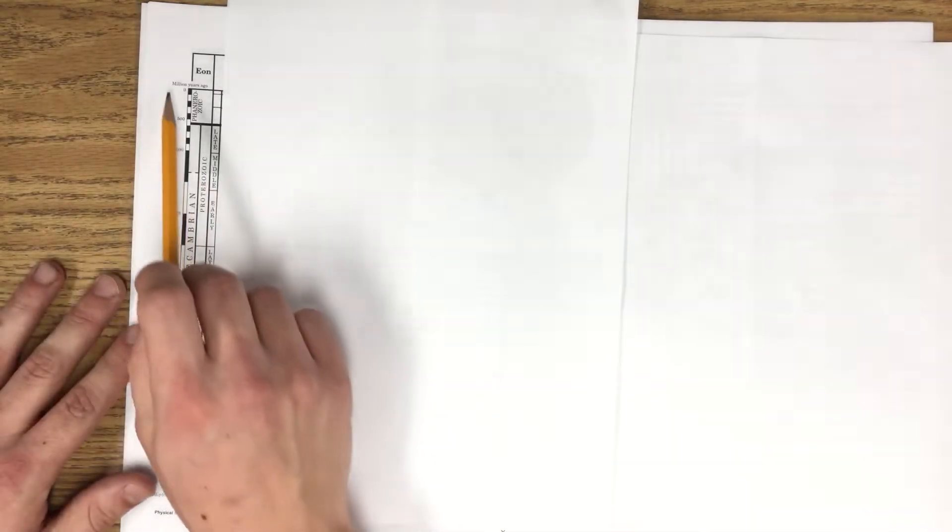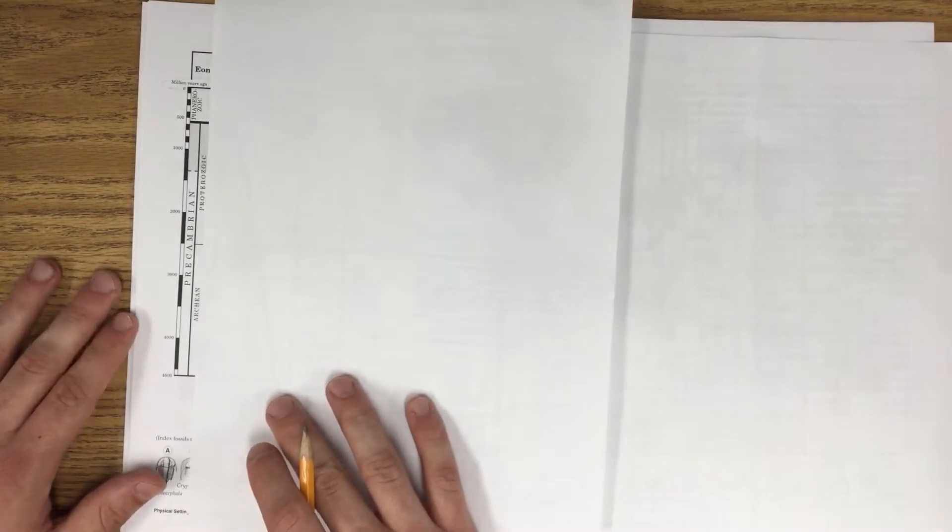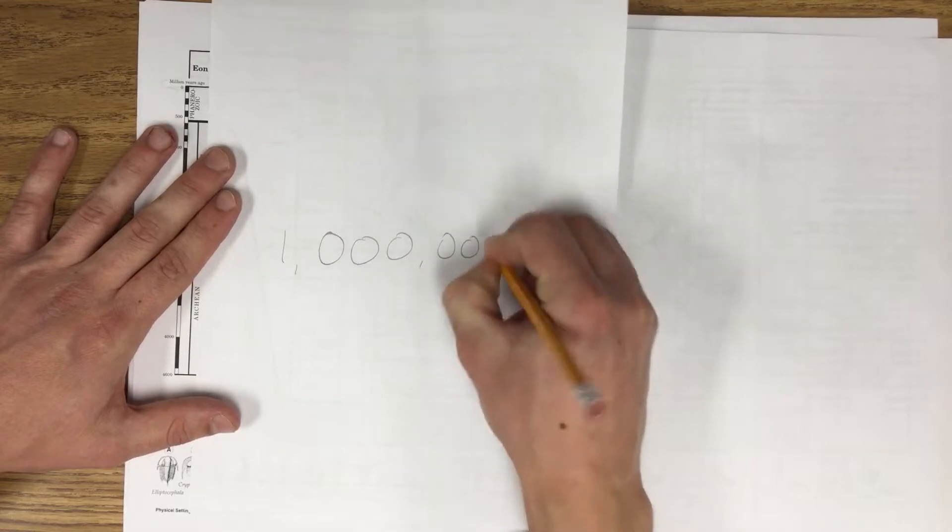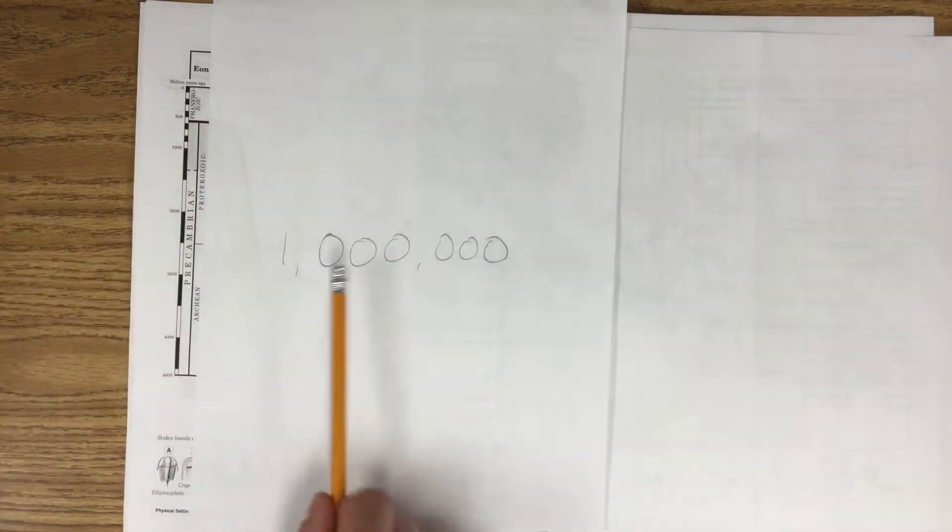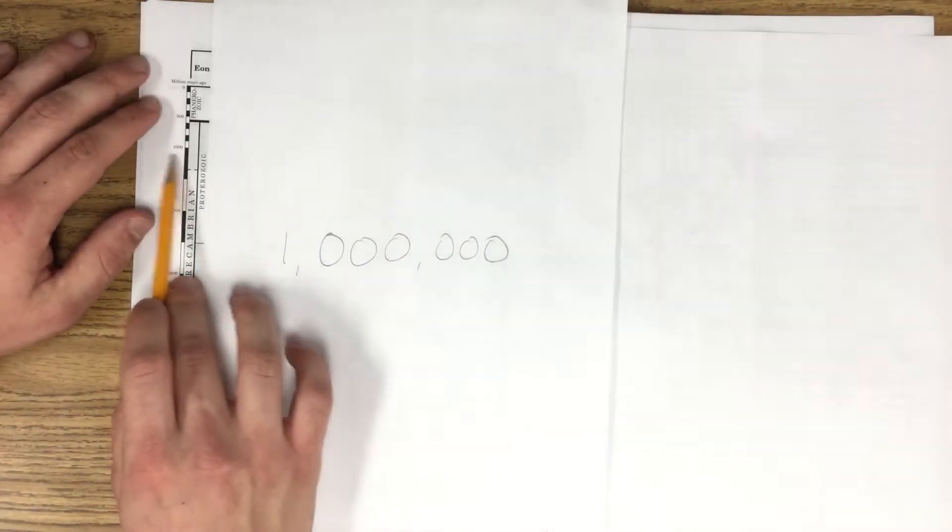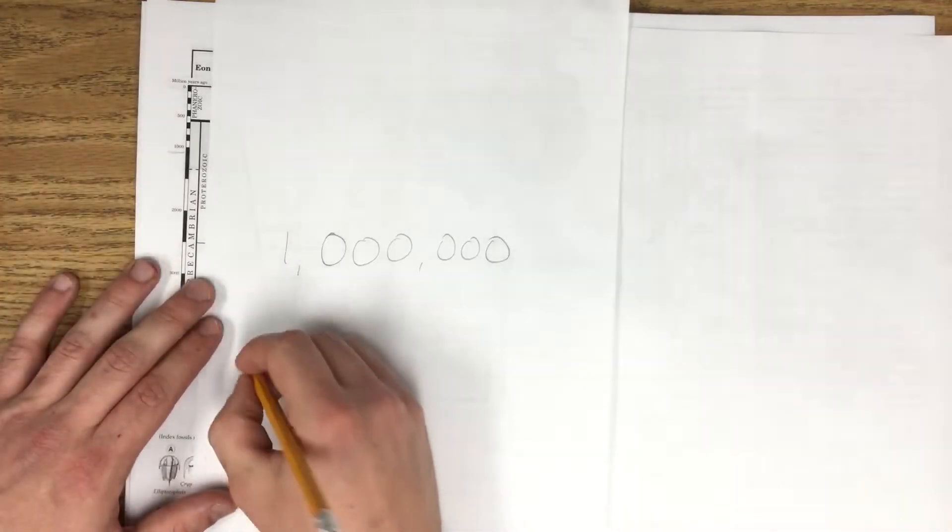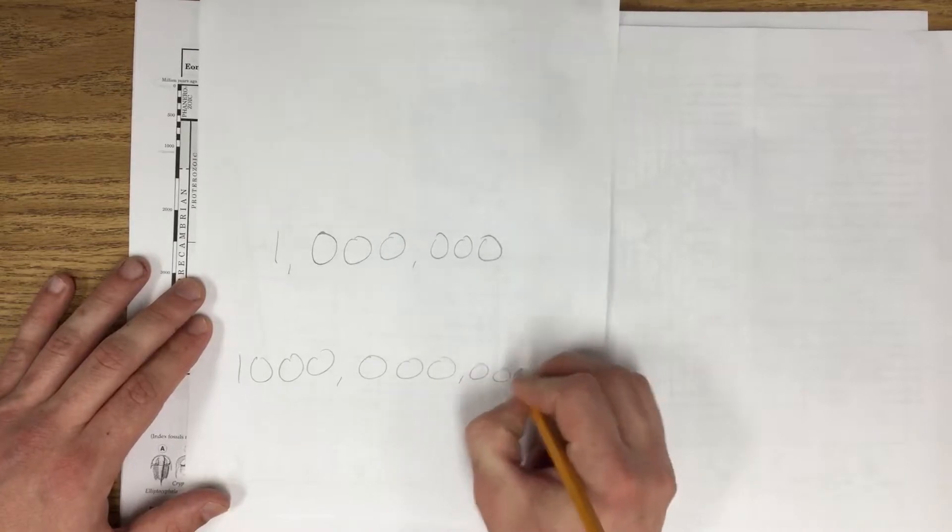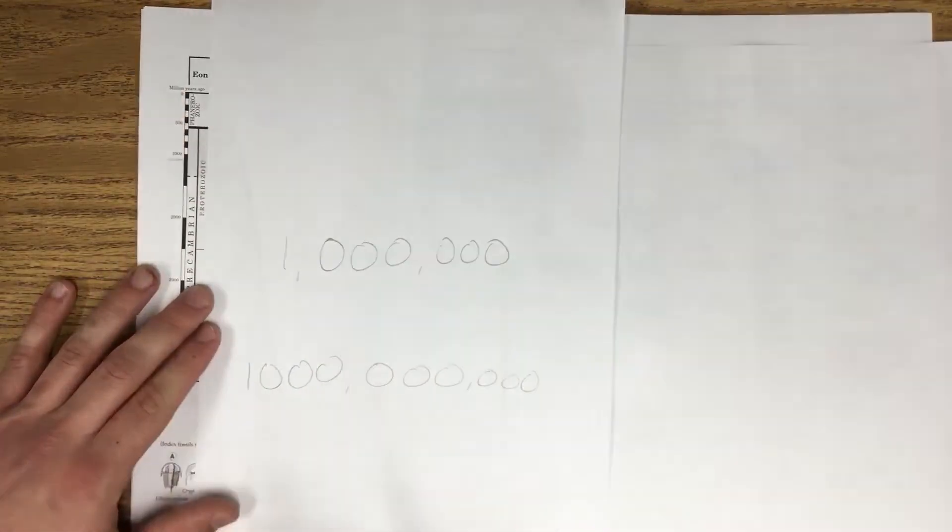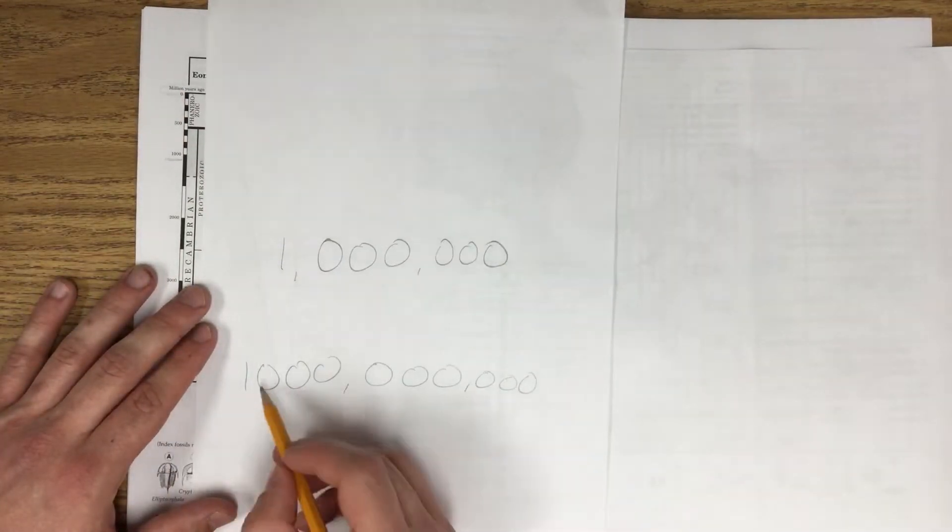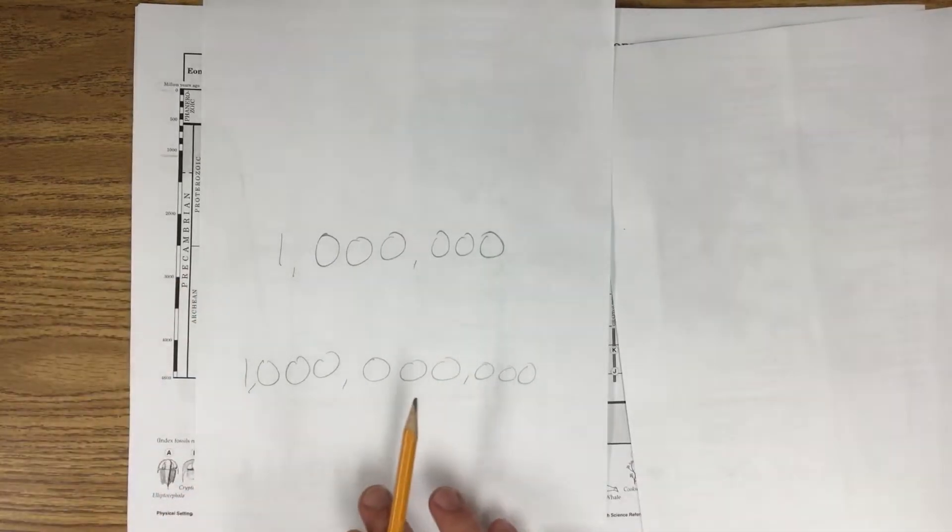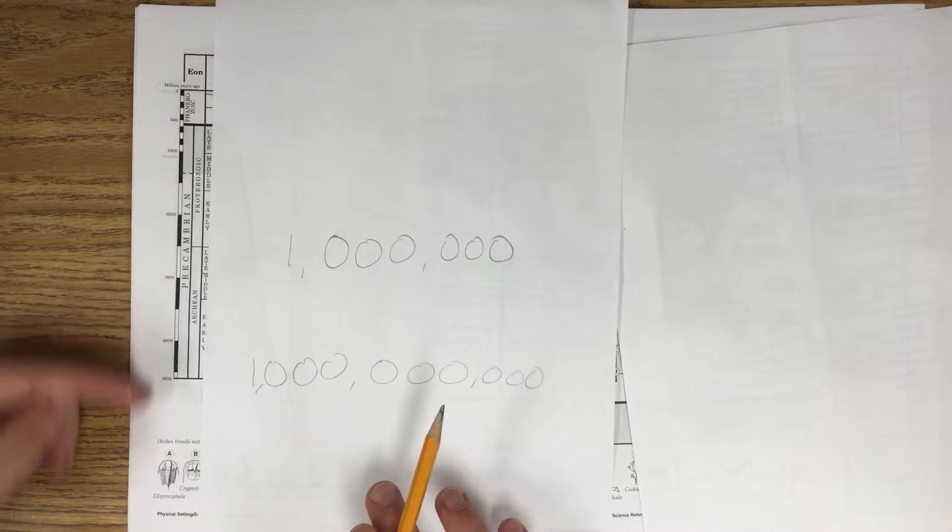The units for this are in millions of years. So something that you do have to know for this is that 1 million has six zeros in it. So since it has six zeros in it, and you see this number 1,000, you have to write 1,000, and then six more zeros after it. So 1,000 million years is actually equal to 1 billion years. That's what you have to know for this column here.